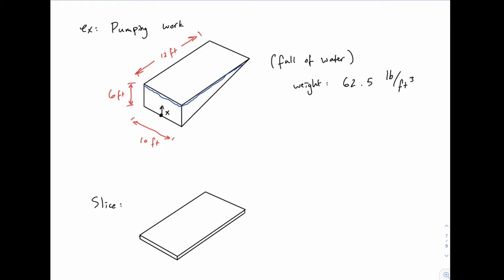So as we've done before, we start by taking a slice, and we've practiced doing slices with volumes before, so it shouldn't surprise you that the slices for this thing will look like rectangles. No matter where we slice it, it always looks like a rectangle.